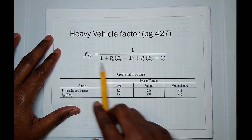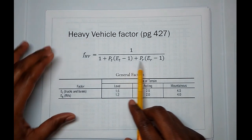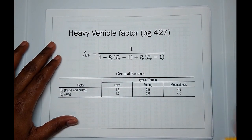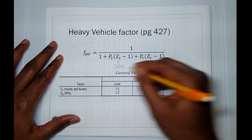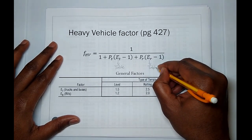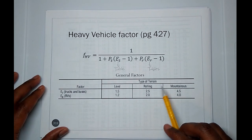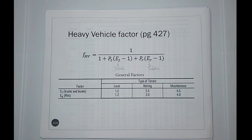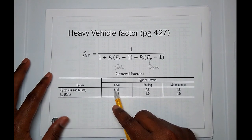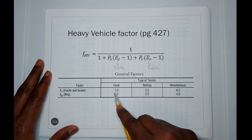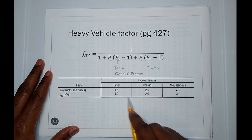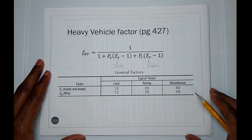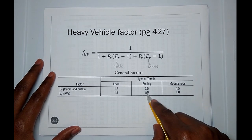The variables E sub T and E sub R can be found from tables. The first is a general table. If you're in a really flat location — say Florida, Louisiana, or Texas — you'll use 1.5 for E sub T and 1.2 for E sub R. If you're in a rolling area like Virginia or parts of Tennessee, you'll use 2.5 and 2.0. And if you're going over a mountain with really steep inclines, you'll use 4.5 or 4.0.